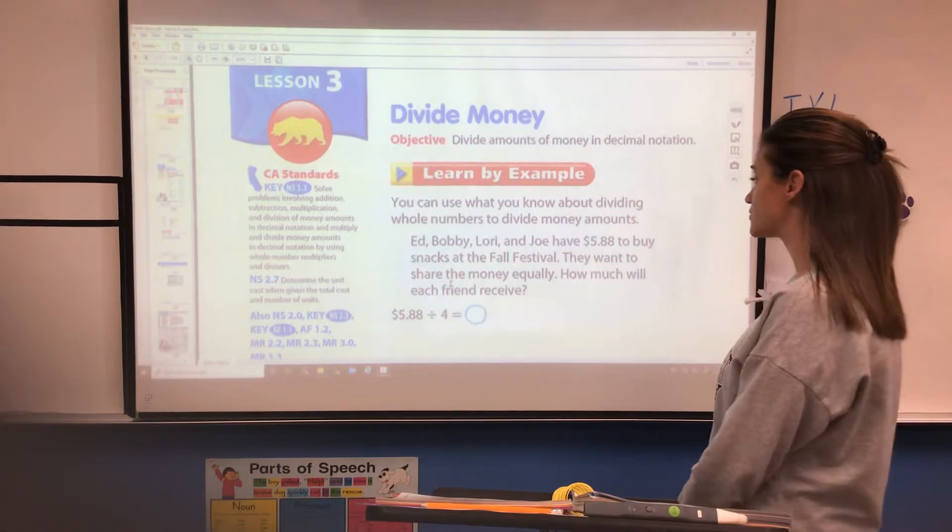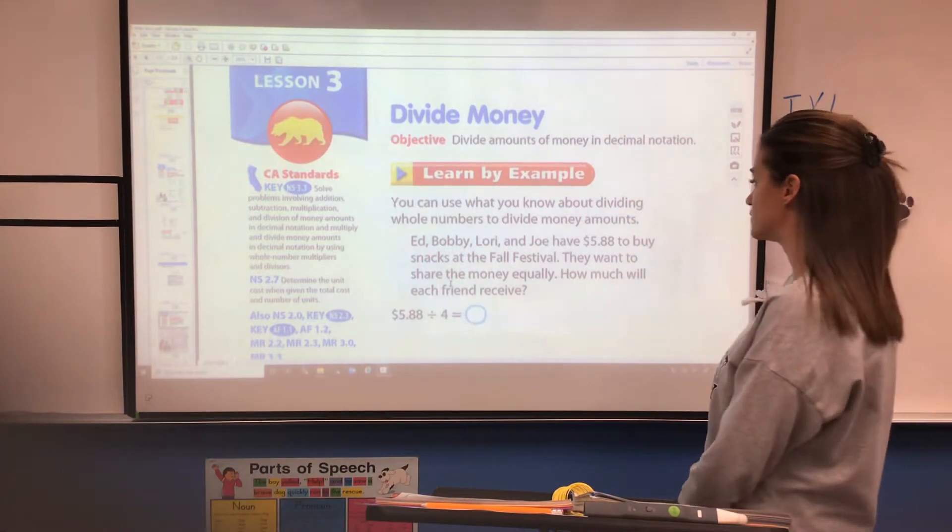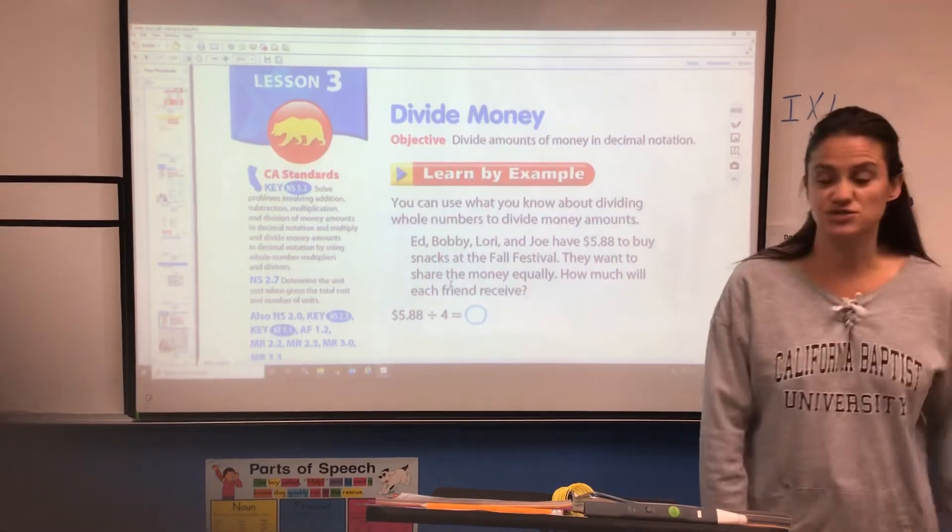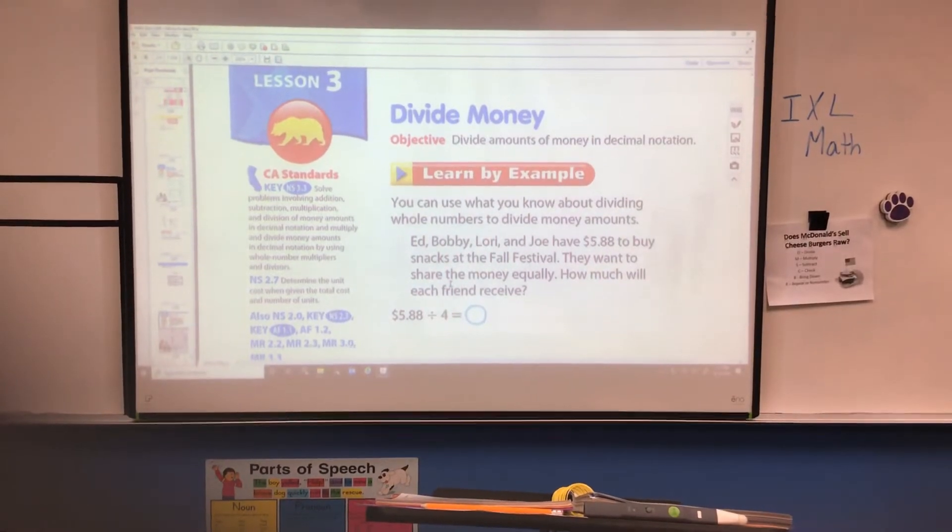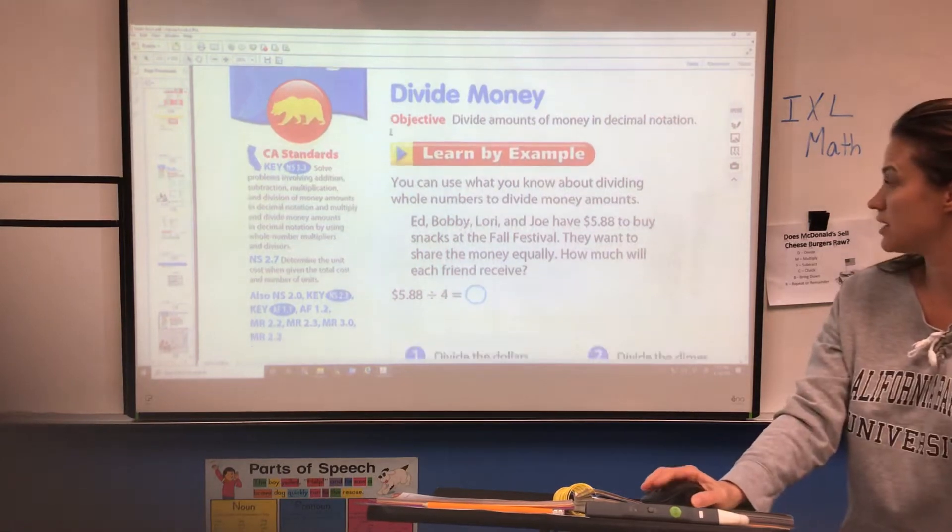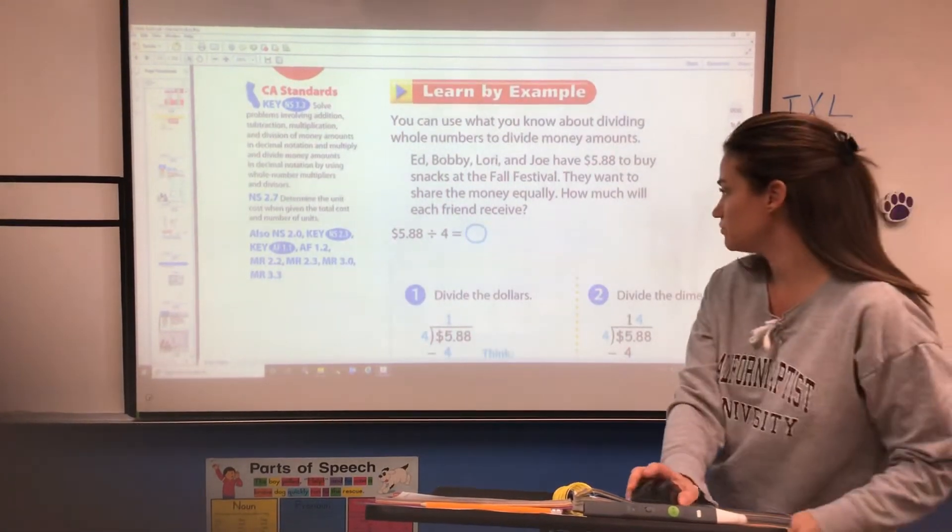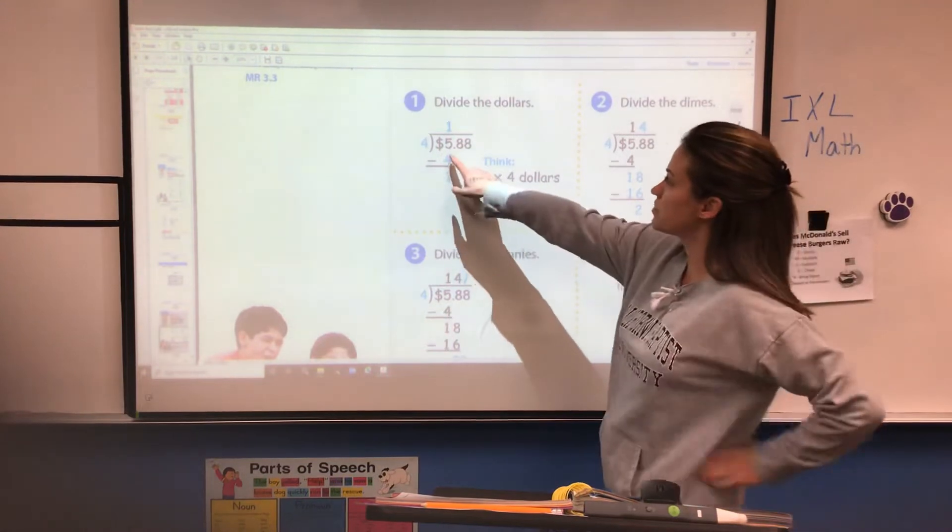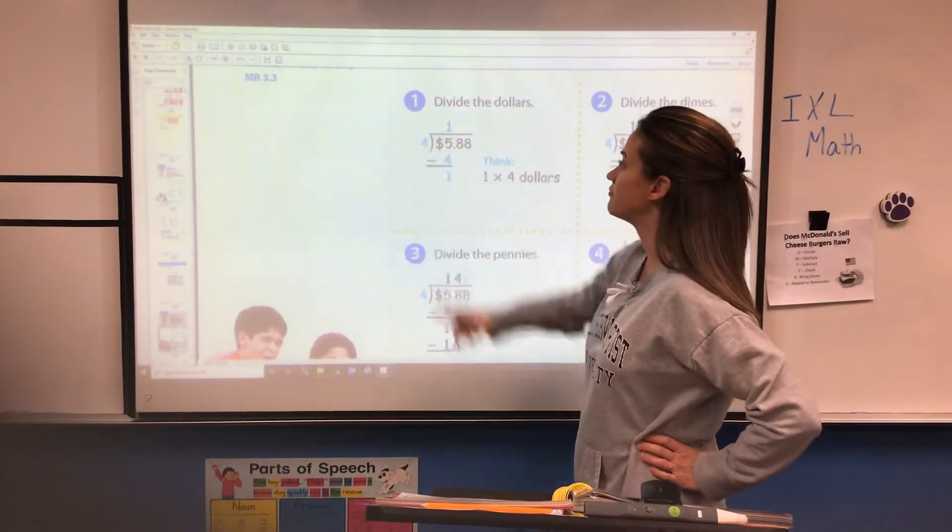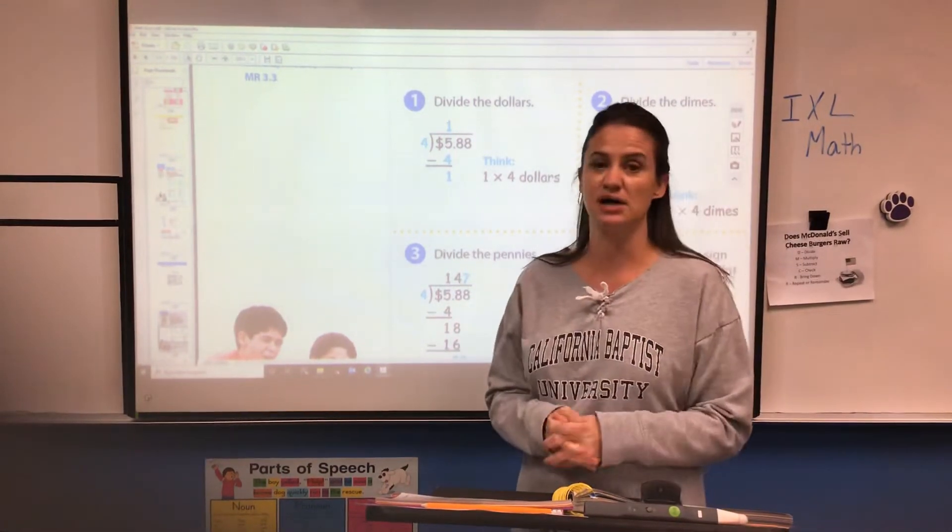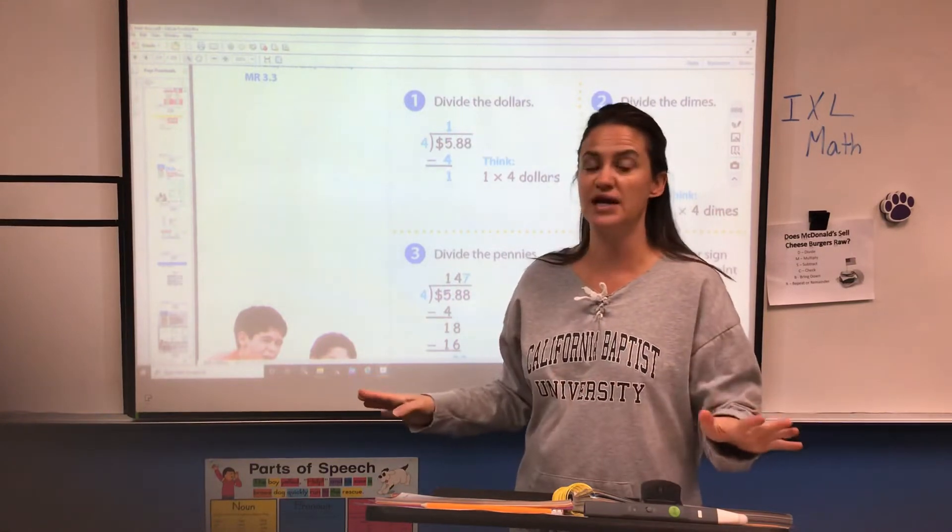Eddie, Bobby, Lori, and Joe have $5.88 to buy snacks at the fall festival. They want to share the money equally. How much will each friend receive? They have the decimal set up at $5.88 divided by four. In the first step, they set up the problem $5.88 divided by four and they're just going to do the division. They're going to pretend like the decimal point and the money sign isn't even there. They just want you dividing everything like you normally would.